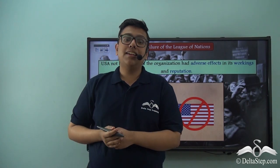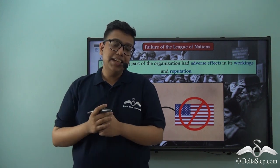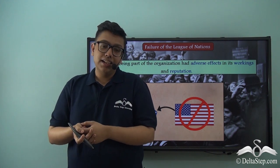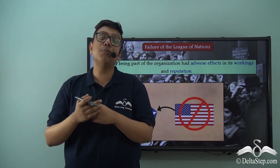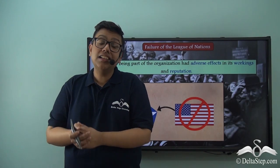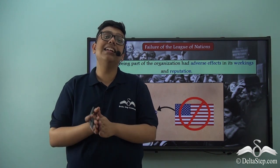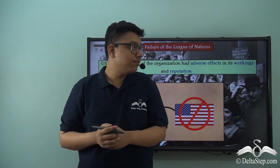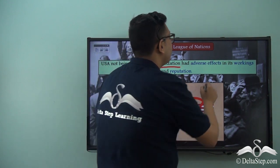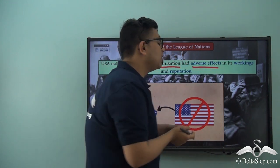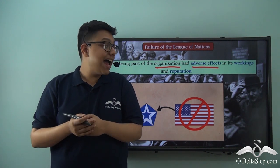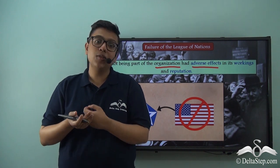The United States of America not joining the League came at a price. After the First World War, countries like Britain and France were no longer superpowers. The United States of America had emerged as one of the most powerful nations of the world, and the very fact that USA remained separated or distant from the League made the other countries not take the League as seriously as they should have. USA not being part of the organization had adverse effects on the League's working, as other nations started to suspect how effective the organization really was, and it also led to the reputation of the League falling over time.